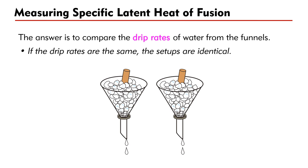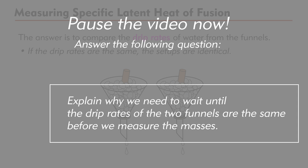When the amount of water in beaker A is significantly more than that in beaker B, we can turn off the power supply. However, we cannot measure the masses of the beakers immediately. Instead, we have to wait until the drip rates of the two funnels are the same again.